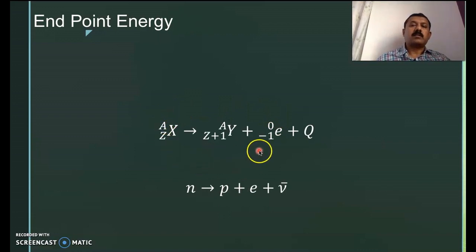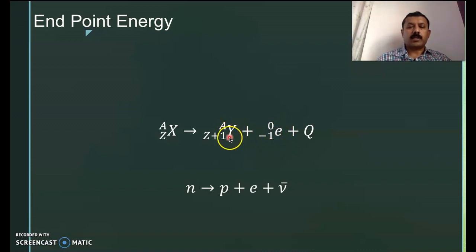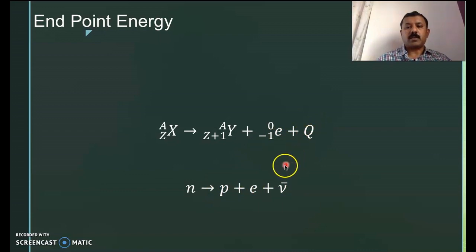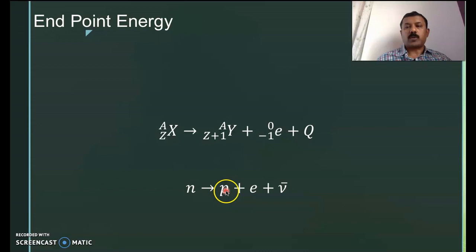This is beta decay. There is a parent nucleus which is beta-active, which emits an electron and hence forms a daughter nucleus for which the charge number increases by 1 unit. This process involves energy released called the Q value of the reaction. Beta minus decay is due to the conversion of a neutron into a proton. This proton remains inside the nucleus whereas the electron comes out, and that is referred to as natural beta decay.